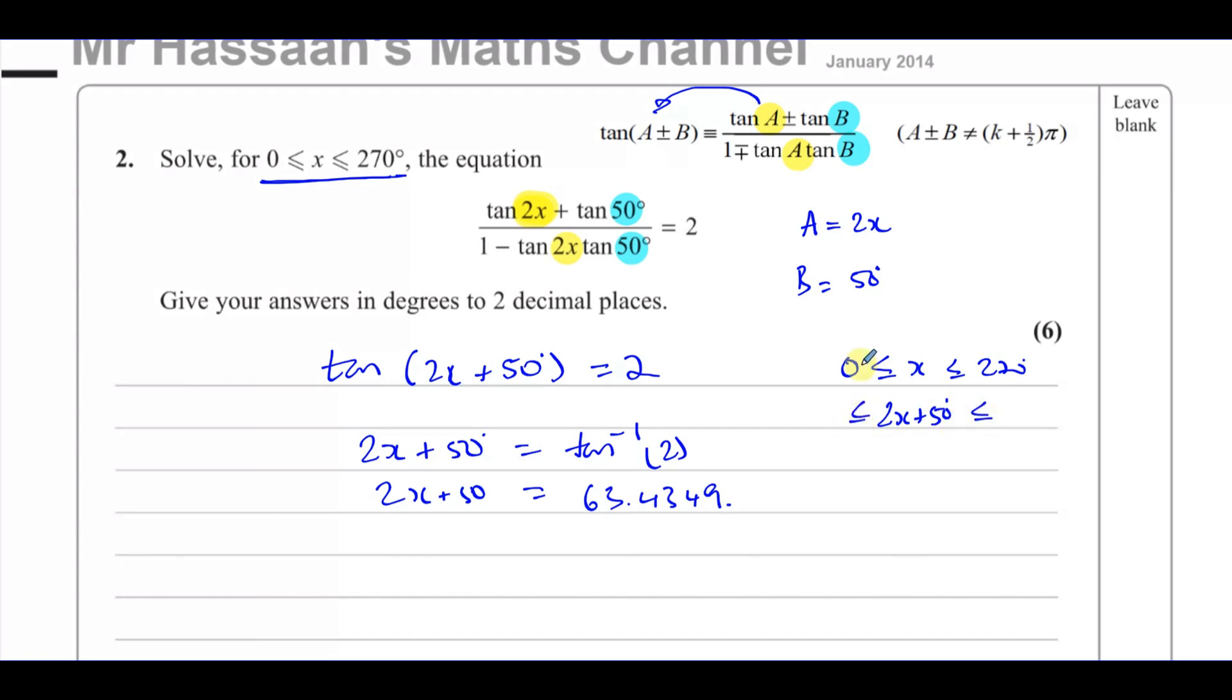So we've got to multiply this by 2 and add 50. That gives you 50 degrees. And we have to multiply by 2 and add 50. That's going to be 540 plus 50, which is 590. So we have to catch all the answers between 50 degrees and 590 degrees.